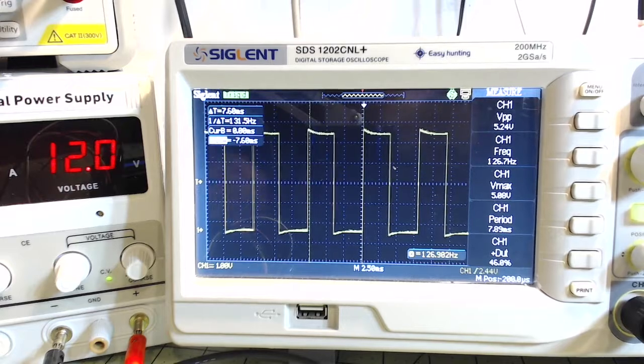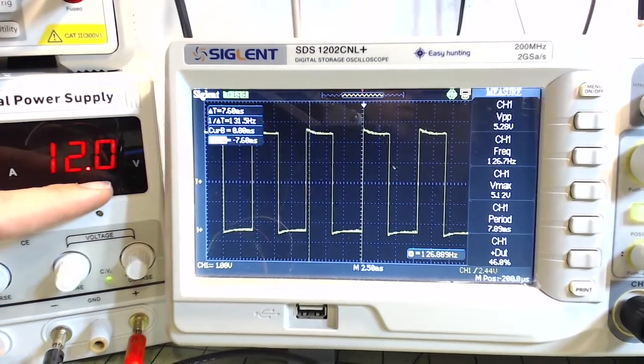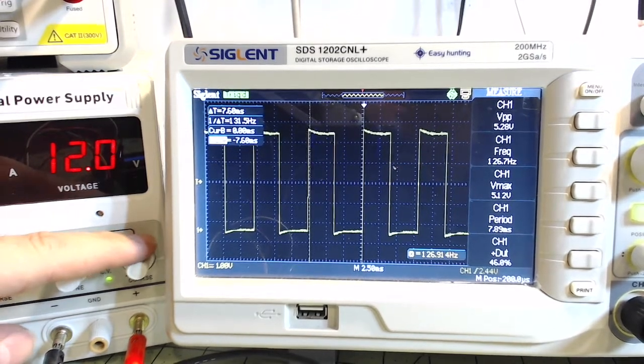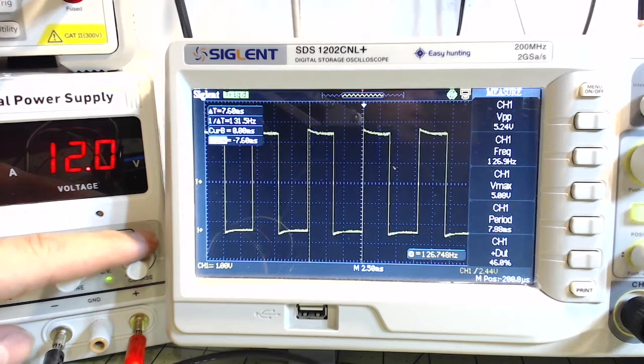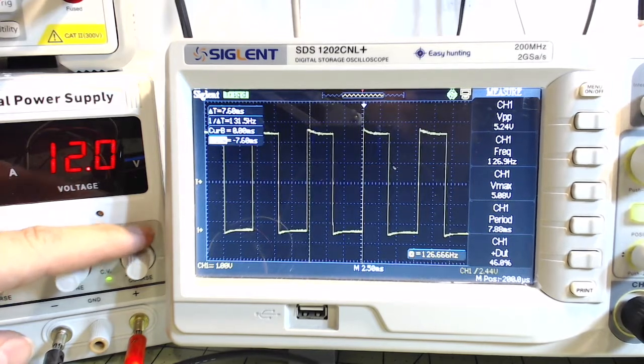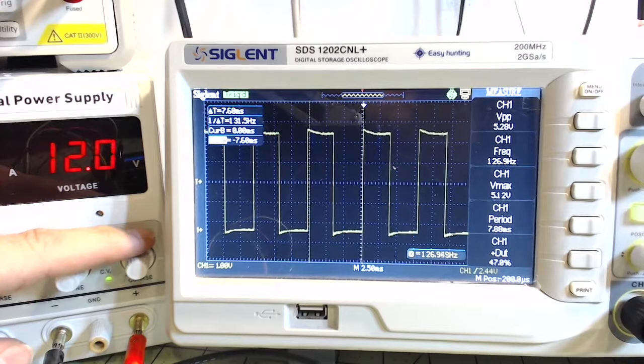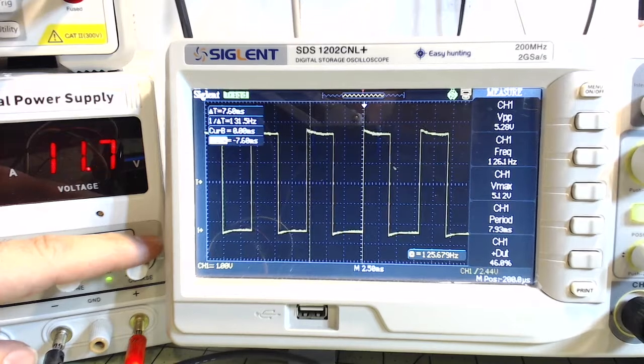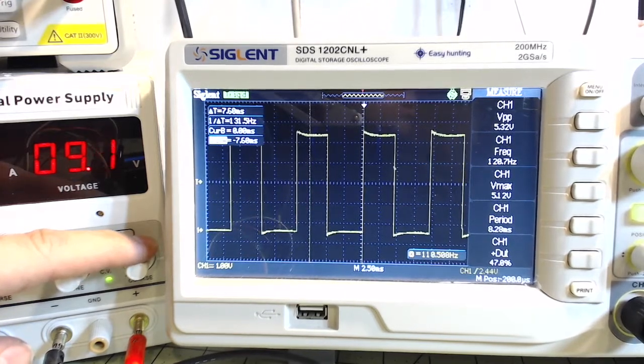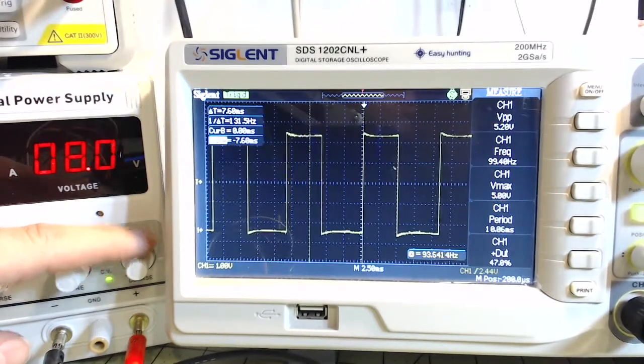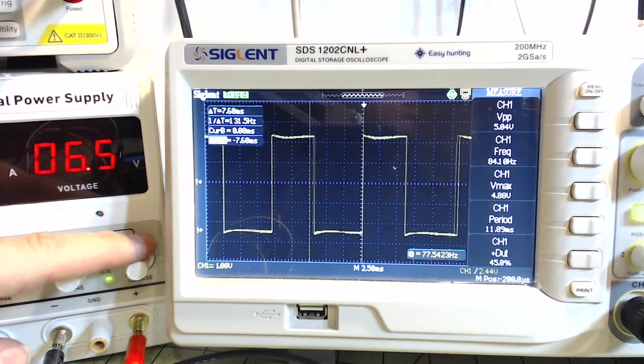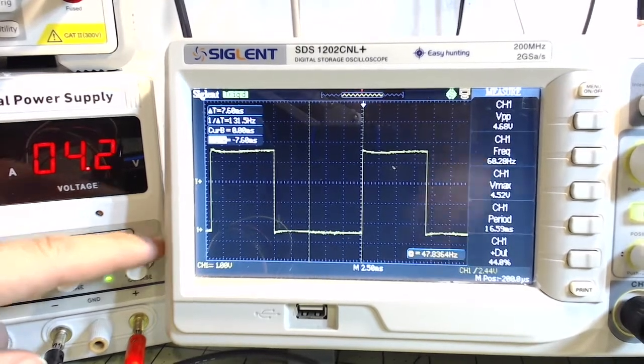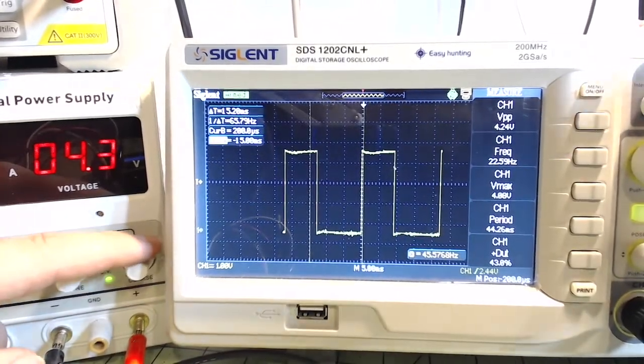Something kind of curious I found doing this project is that when the voltage is 12 volts, which is the max voltage for the fan, then the peak to peak voltage is around 5.24 to 4.28. So let's call it 5.3 of the feedback waveform. But as you go down in voltage, the supply voltage, the actual feedback voltage also goes down as well. You can see it continues to go down as the frequency goes down as well.